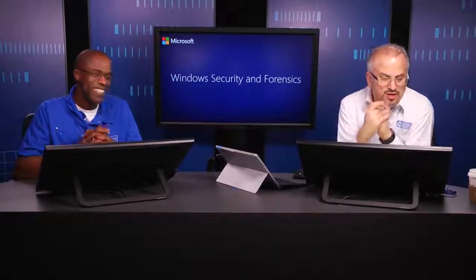How many layers are in the OSI model? Usually seven — that's what we learned in school. But when you look at the slides, it's eight. The eighth layer is the human layer. Then we have the application, presentation, session, transport, network, data link, and physical layer. Network forensics involves everything across these layers, and each layer has associated protocols.